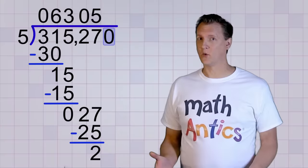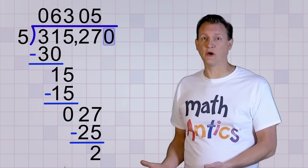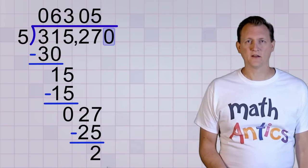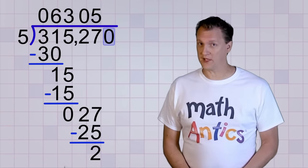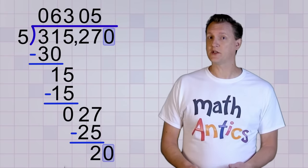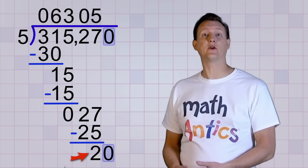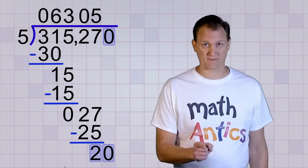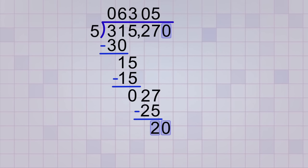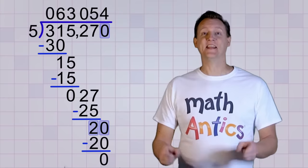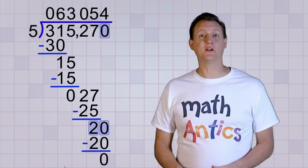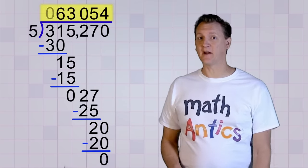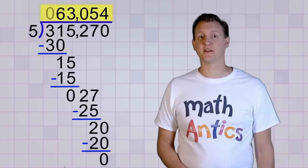Now for that last digit, which is a 0. And you might wonder, why do we even have to bring a copy of a 0 down? Isn't that nothing? But the 0 is an important placeholder, and when we bring a copy of it down, it changes our remainder of 2 into a remainder of 20. Now that's a big difference! Now we ask how many times will 5 divide into 20? 4. 4 times 5 is 20, and 20 minus 20 is 0. Yes, we're done! There's no more digits to divide, and you can see that our final answer is 63,054.